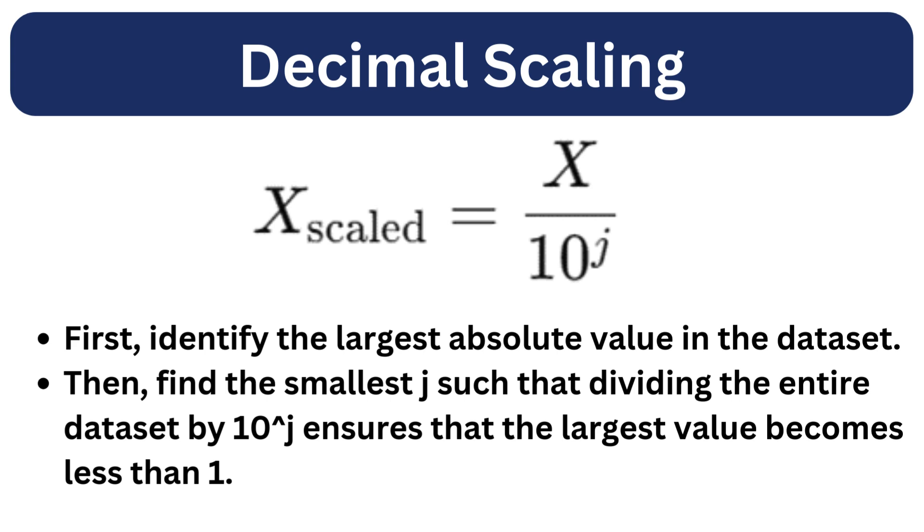Here is the formula for decimal scaling. Here j is the smallest integer such that the largest absolute value in the dataset is less than 1 after scaling.